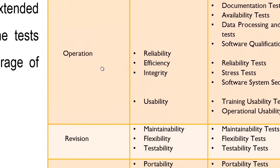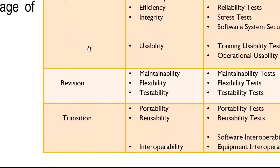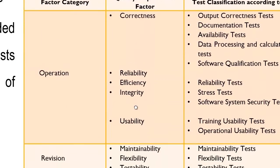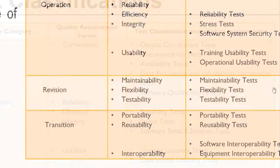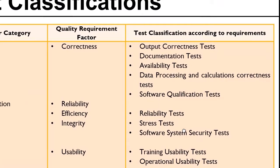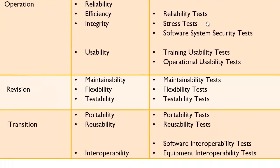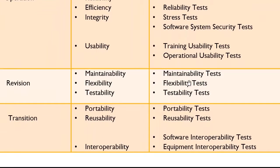The Transition factor category covers quality requirement factors of portability, reusability, and interoperability, with corresponding test classifications: portability test, reusability test, software interoperability test, and equipment interoperability test.